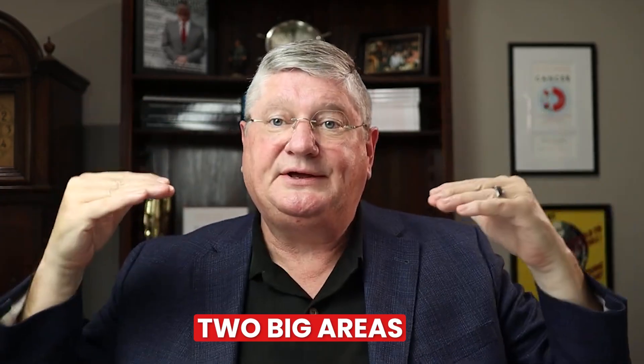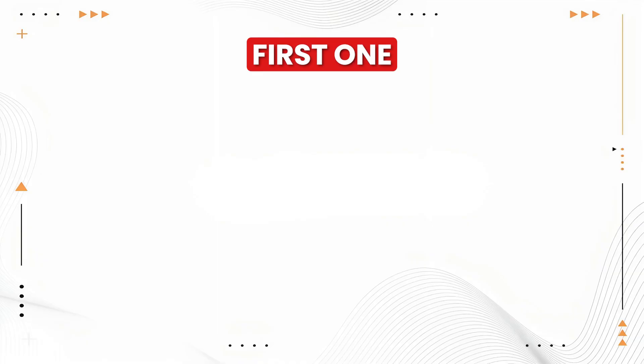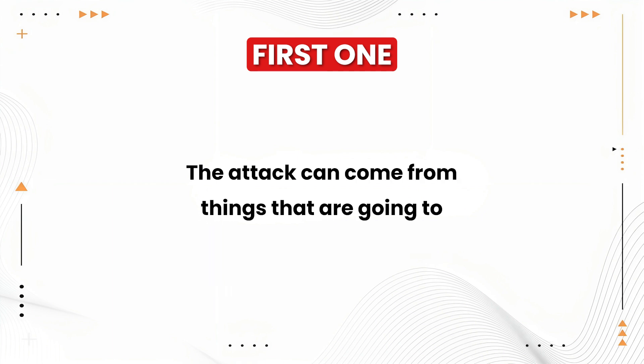There are two big areas we want to look at. The first is that the attack can come from things that are going to affect the cell from usually the outside, and the attacks can also come from the inside. Then we'll talk about what they cause — what is an attack, what's a bad guy to a cell?